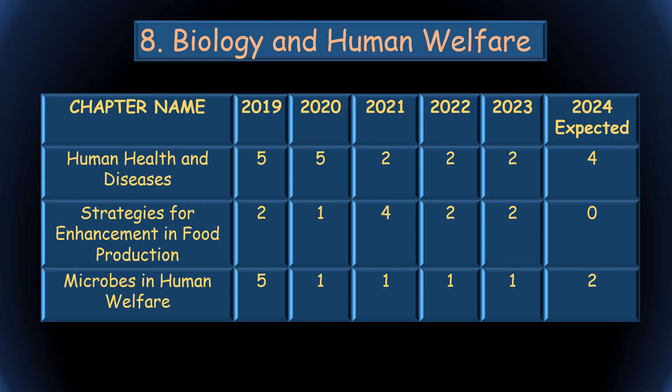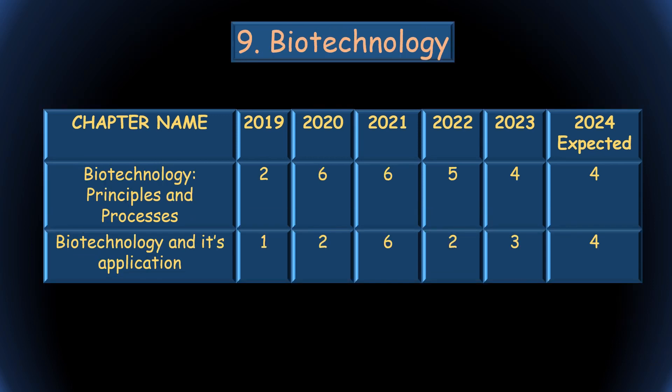The ninth unit — Biotechnology — is very good and easy to score. Mainly application-based questions come from its two chapters. In 2023, four questions came from Biotechnology Principles and Processes, and Biotechnology and its Applications also had three questions. In 2024, we can expect a total of eight questions from this unit — four from each chapter.